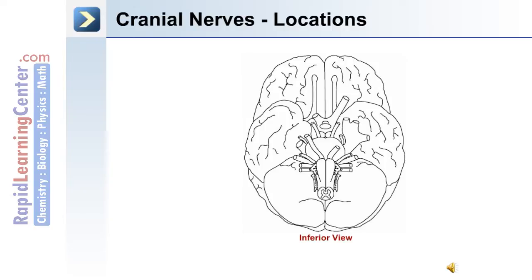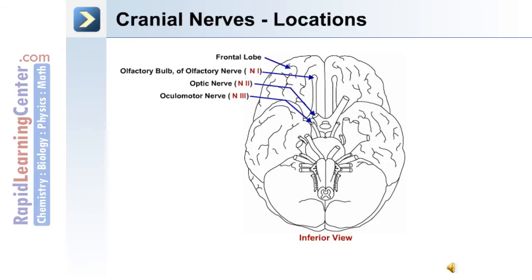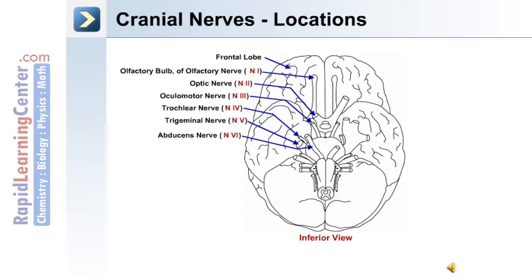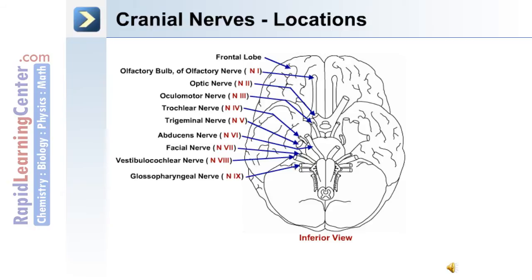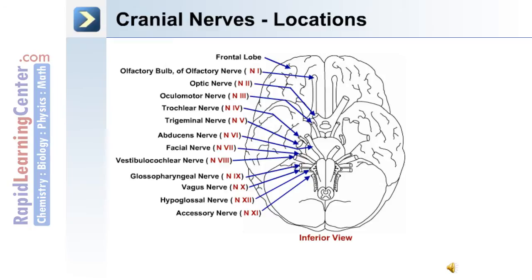This inferior view of the brain depicts the location of the cranial nerves. The first cranial nerve is the olfactory nerve, the second is the optic nerve, the third is the oculomotor nerve, the fourth is the trochlear nerve, the fifth is the trigeminal nerve, the sixth is the abducens nerve, the seventh is the facial nerve, the eighth is the vestibulocochlear nerve, the ninth is the glossopharyngeal nerve, the tenth is the vagus nerve, the eleventh is the accessory nerve, and the twelfth cranial nerve is the hypoglossal nerve.